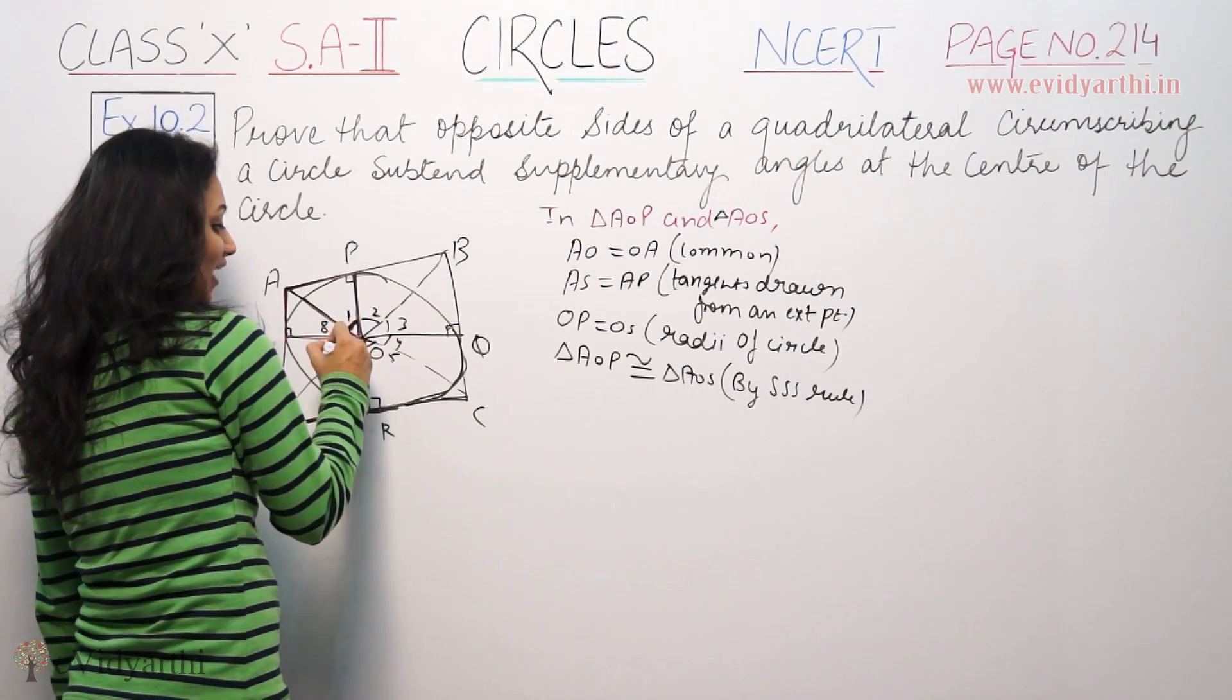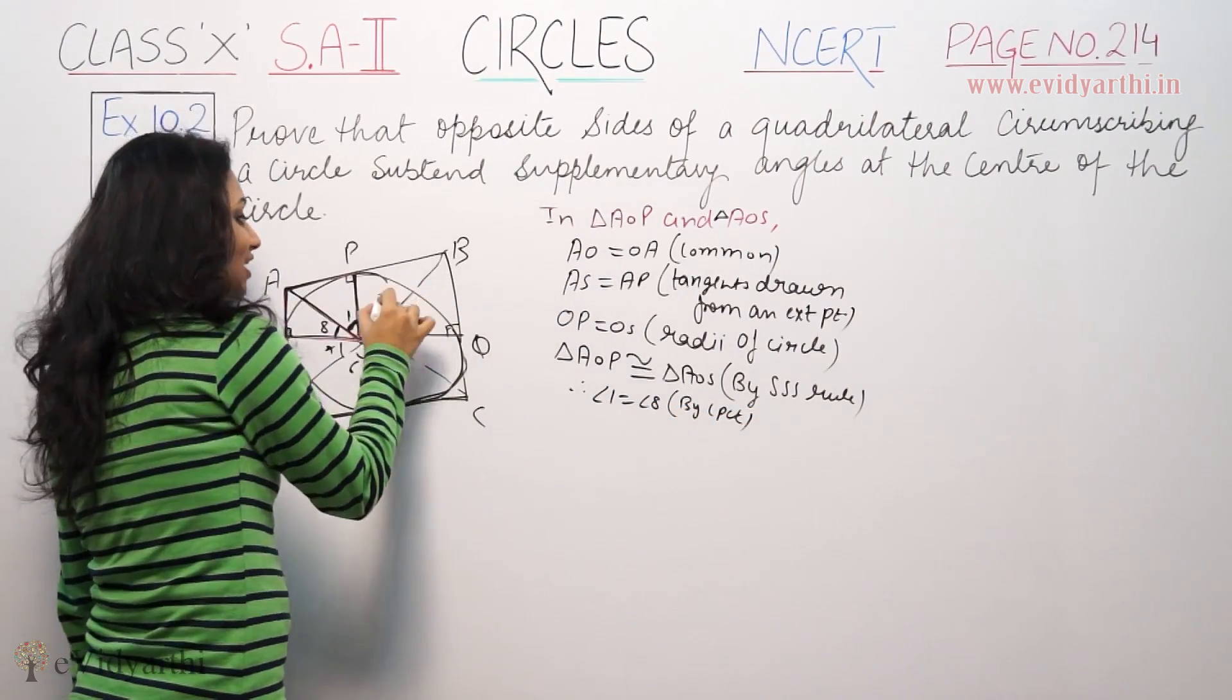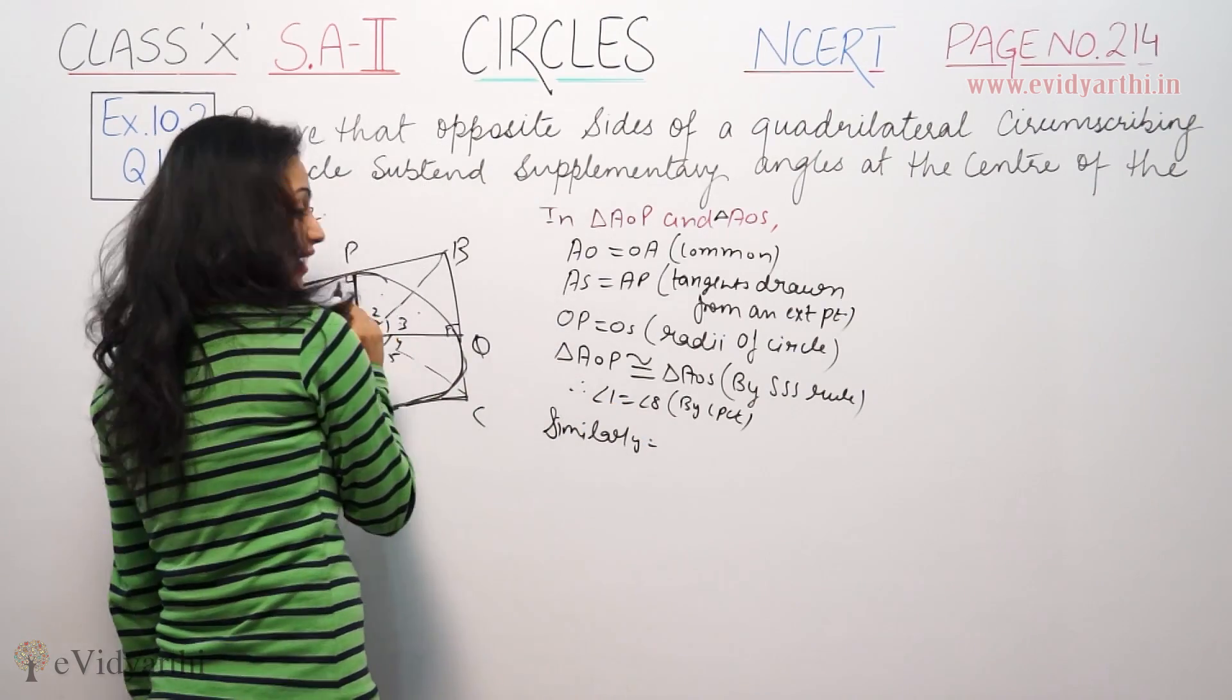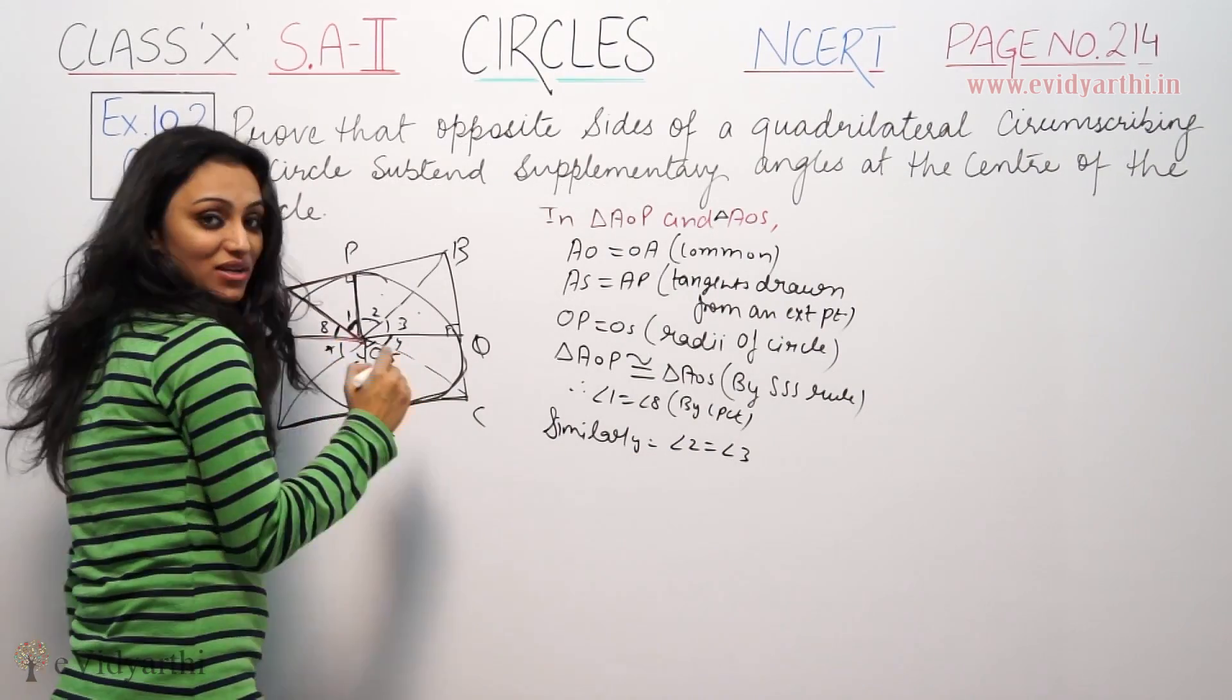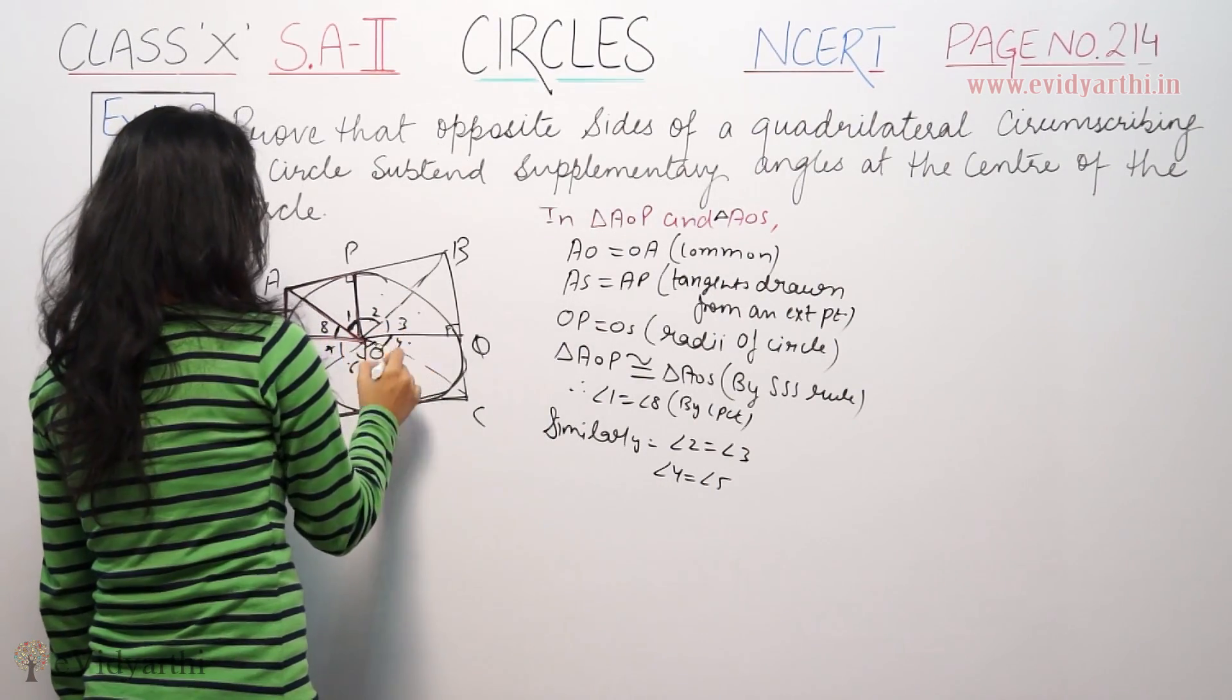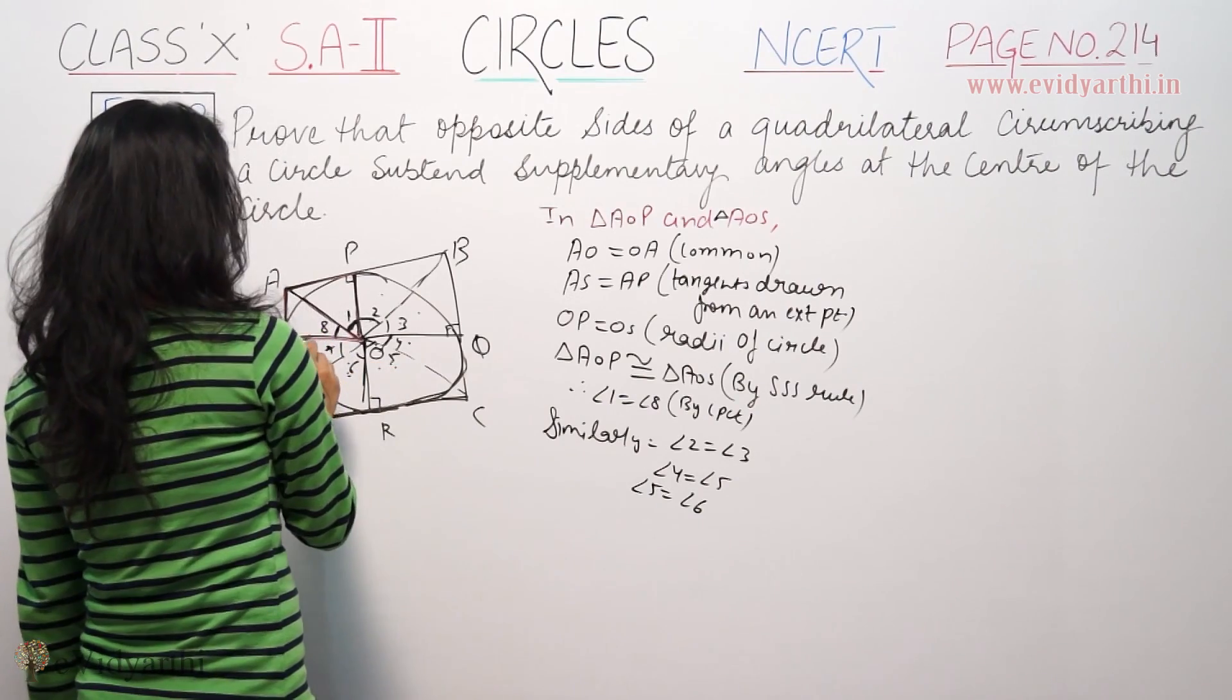Similarly, by proving triangles congruent at each vertex, we get angle 1 equals angle 8, angle 2 equals angle 3, angle 4 equals angle 5, and angle 6 equals angle 7.